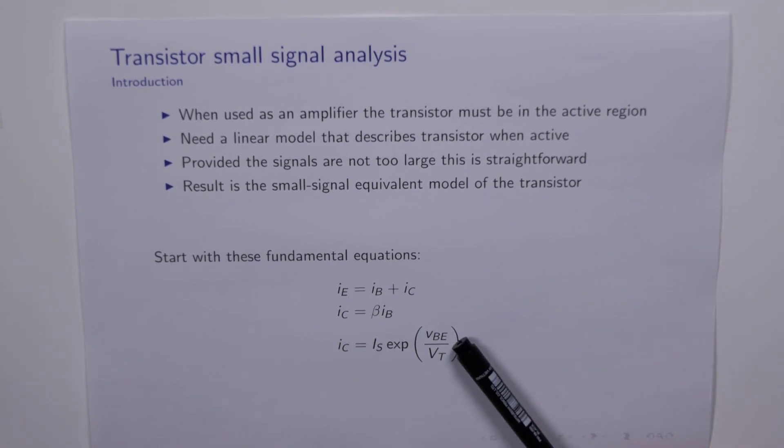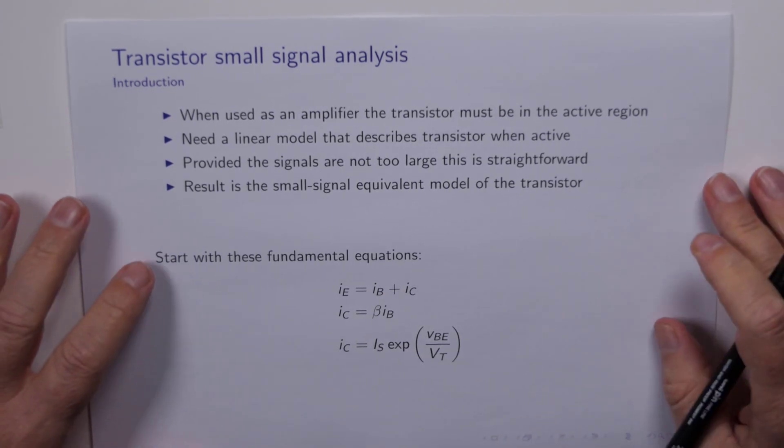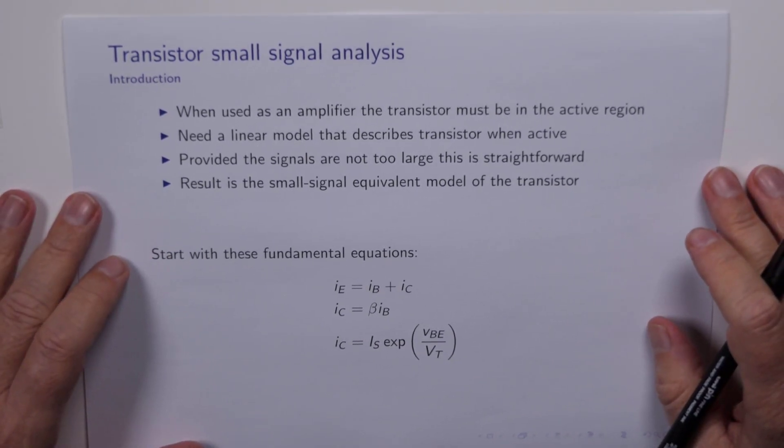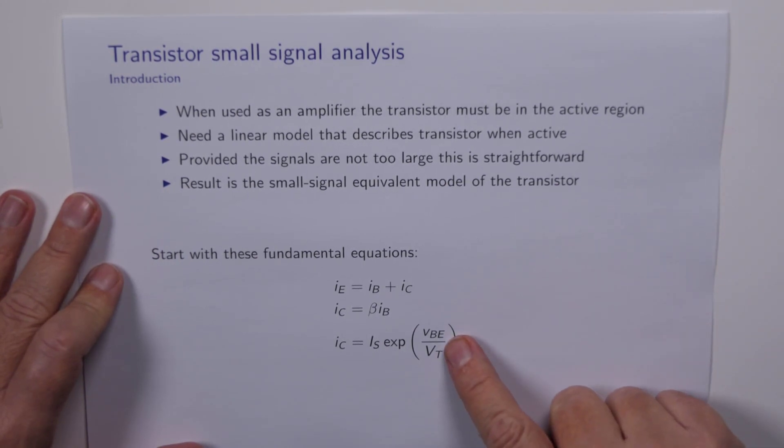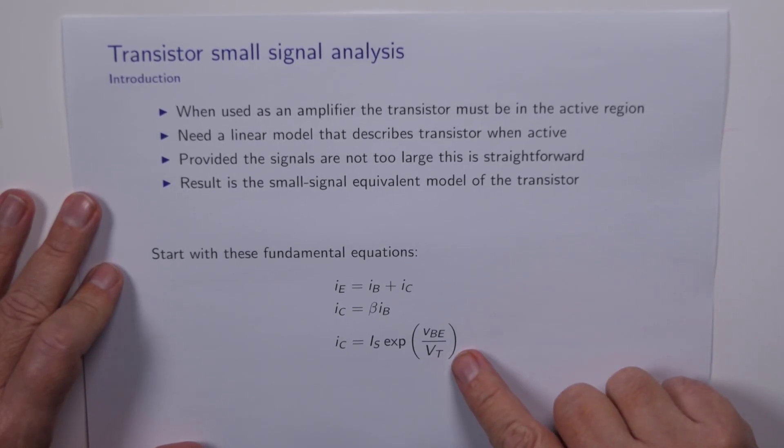And this one is new. This connects the collector current to the base emitter voltage, and it looks very much like the diode equation because it essentially is the diode equation, but as it pertains to the base emitter junction of the transistor as opposed to the PN junction of a diode. This is the thing that's going to cause us most grief because it's clearly nonlinear, and so we've got to do something clever about this.